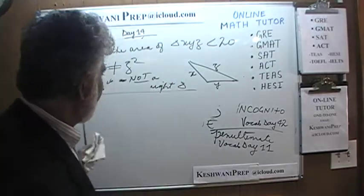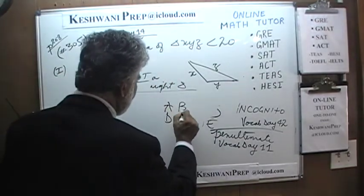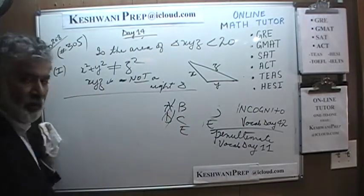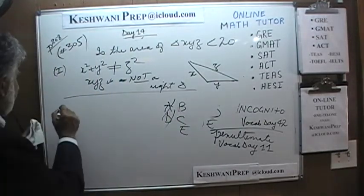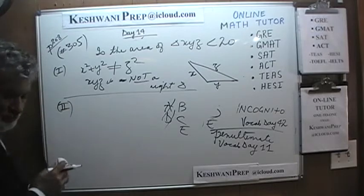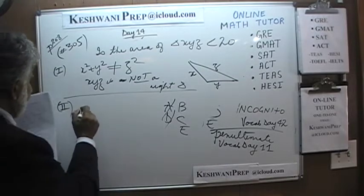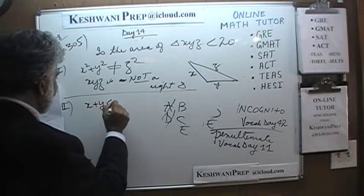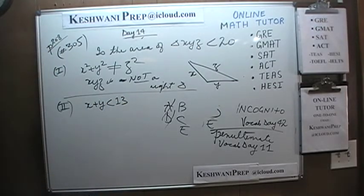The first statement is not very helpful — the answer cannot be A or D; it has to be B, C, or E. The second statement tells us that X plus Z is less than 13.